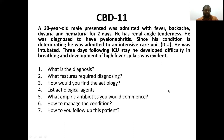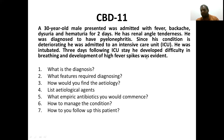CBD 11: a 30-year-old male presented with fever, nausea, dysuria, and hematuria for two days. He had renal angle tenderness and was diagnosed with pyelonephritis. Since his condition deteriorated, he was admitted to the intensive care unit and intubated. After three days of ICU stay, he developed difficulty breathing and a high spike fever. The diagnosis is ventilator-associated pneumonia.